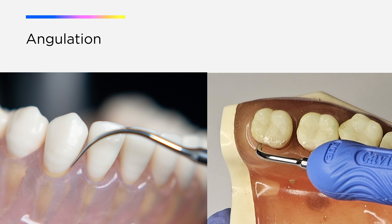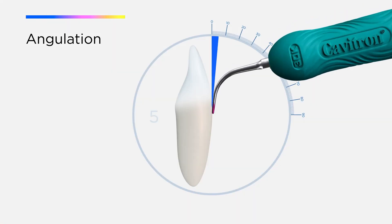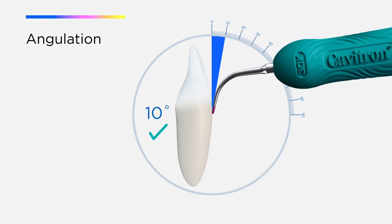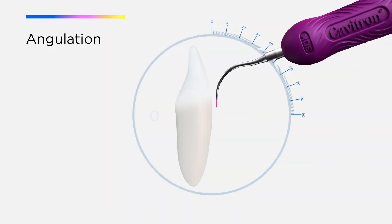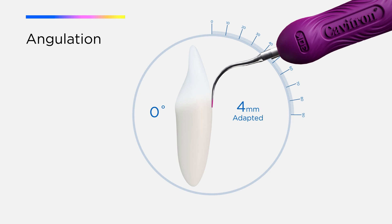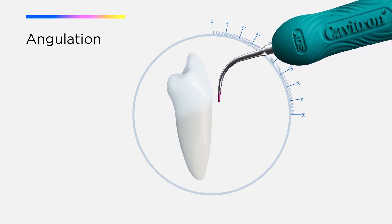The goal is to keep the active area of the insert tip, not the direct point, adapted to the tooth surface. Maintaining a 0 to 15 degree angulation between the active area and the tooth helps achieve this. Teeth are irregular in shape; therefore, it is impossible to use the same angulation on every tooth or root. Angulation will constantly change throughout the ultrasonic procedure.